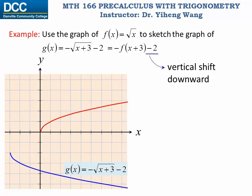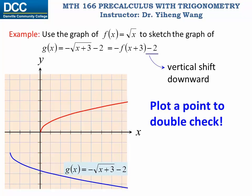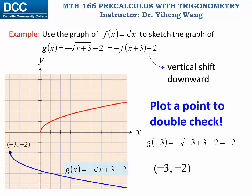If you get confused or want to double-check, it's quite simple — just calculate one or two solution points. For example, g evaluated at x = -3 is -2, indicating that (-3, -2) must be a point on the graph, and indeed it is a point on the graph.